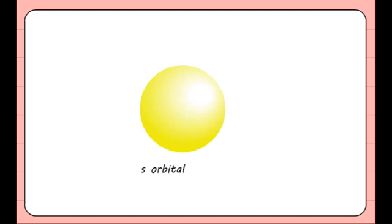The S orbital is spherical in shape and not circular. Each S orbital can accommodate two electrons with opposite spins. At any instance in time, an S electron is probably located somewhere within the spherical region.